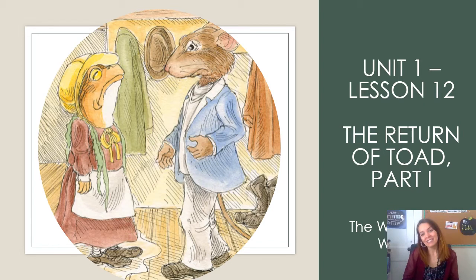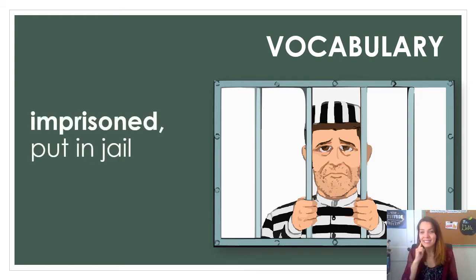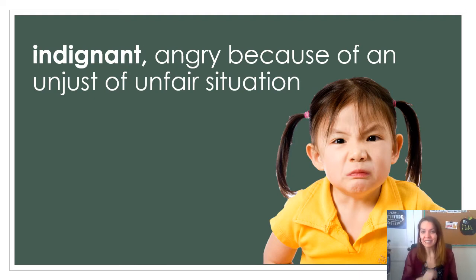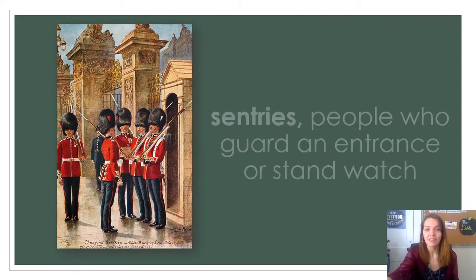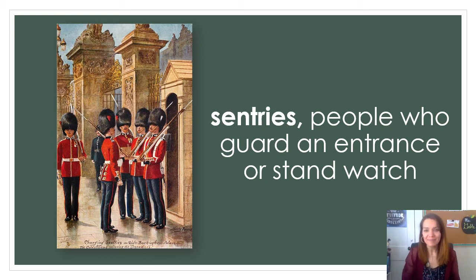Today we see Toad seeing Rat. At the end of our last chapter we left off on a bit of a cliffhanger. Our first vocabulary word is imprisoned — say it: imprisoned — and that means to put in jail. Our next word is indignant — indignant — and that means angry because of an unjust or unfair situation. And sentries — sentries — those are people who guard an entrance or stand watch, much like these British soldiers. They are sentries.